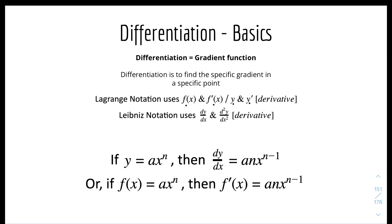We'll start with some basics. Differentiation is basically the gradient function — it is used to find the specific gradient at a specific point given the function or equation of the curve or the line. We have two notations: the Lagrange notation, which uses f(x) or y, and the Leibniz notation, which uses dy over dx, for derivative or differentiation.